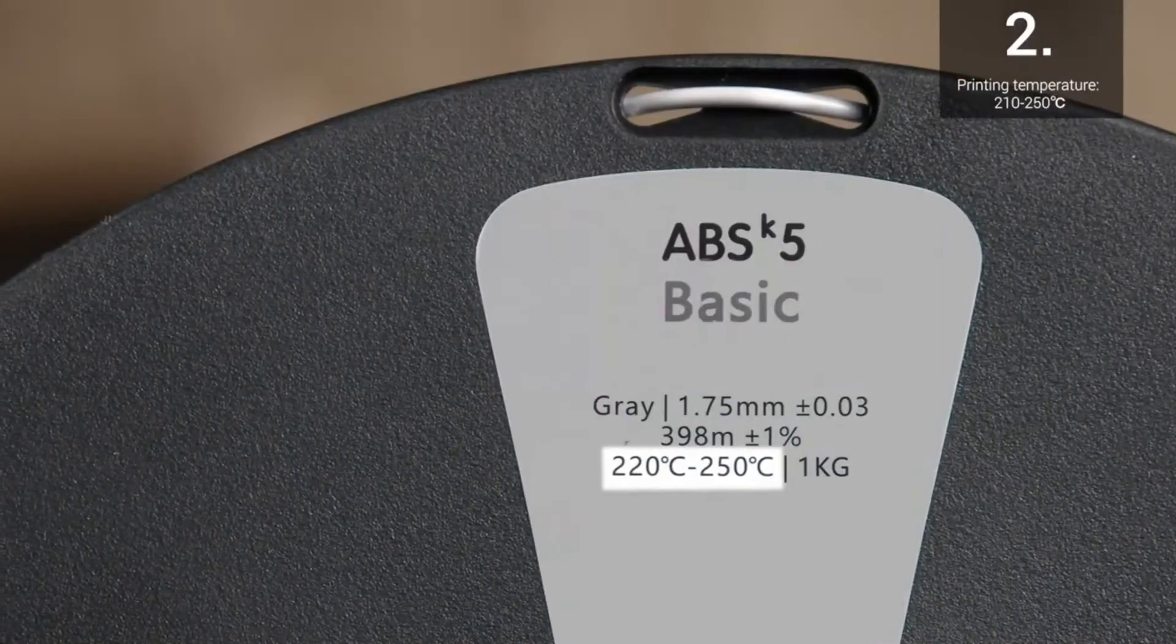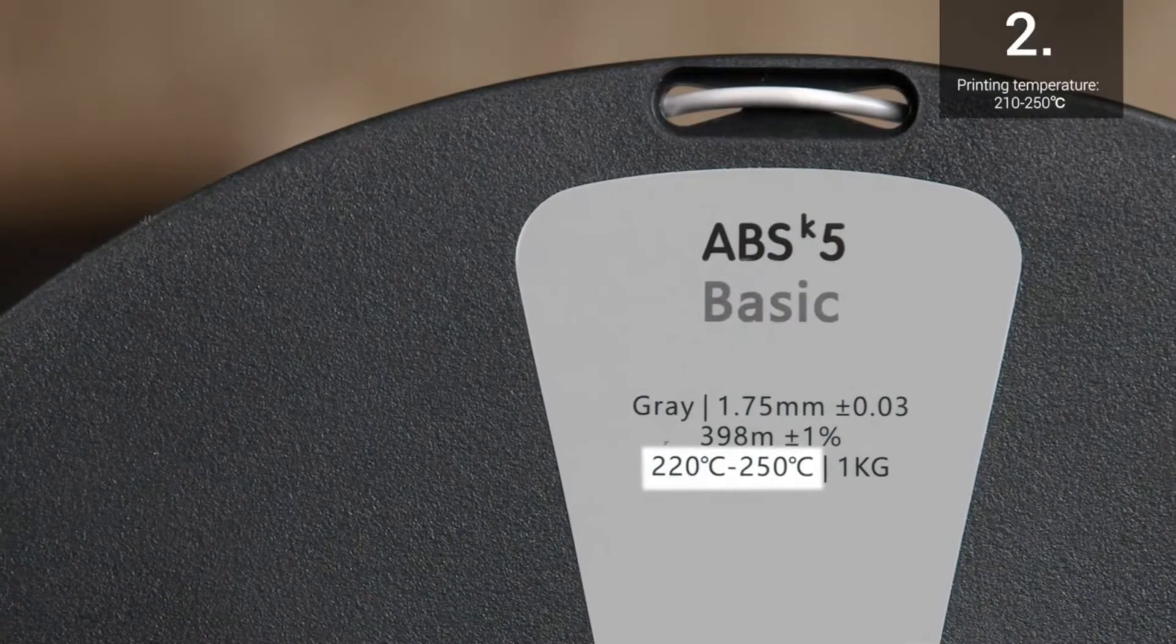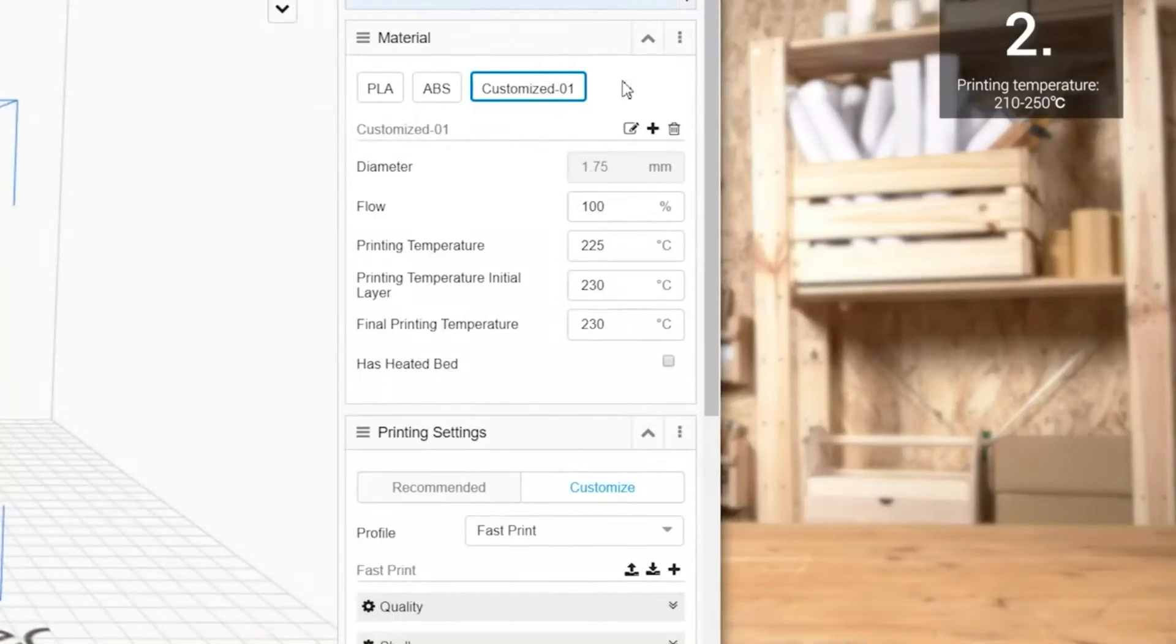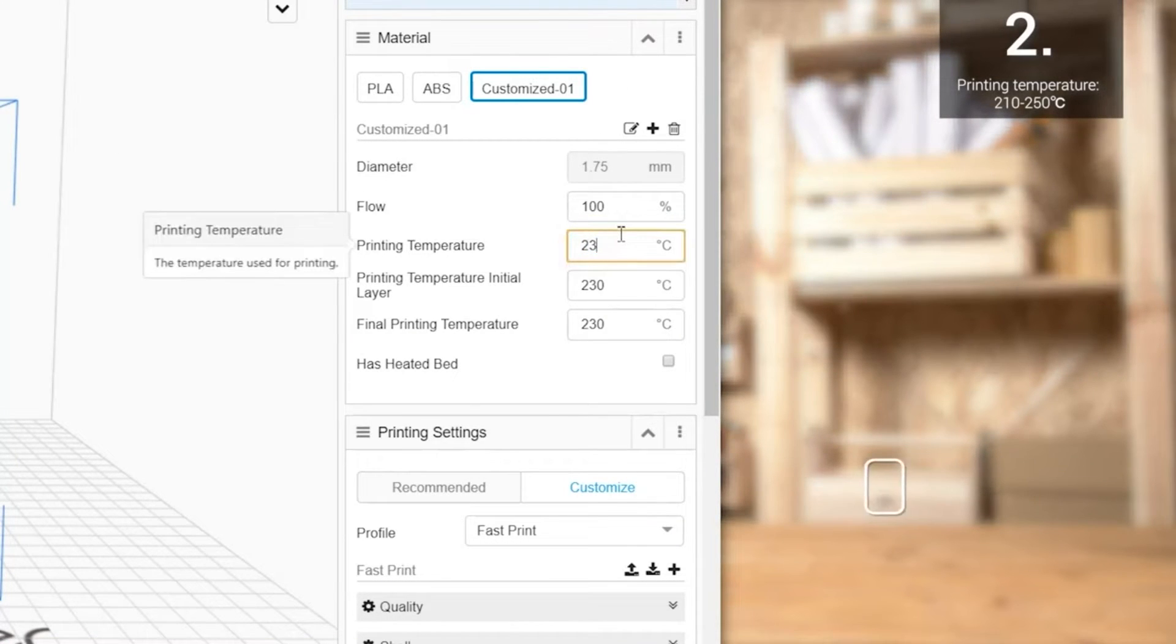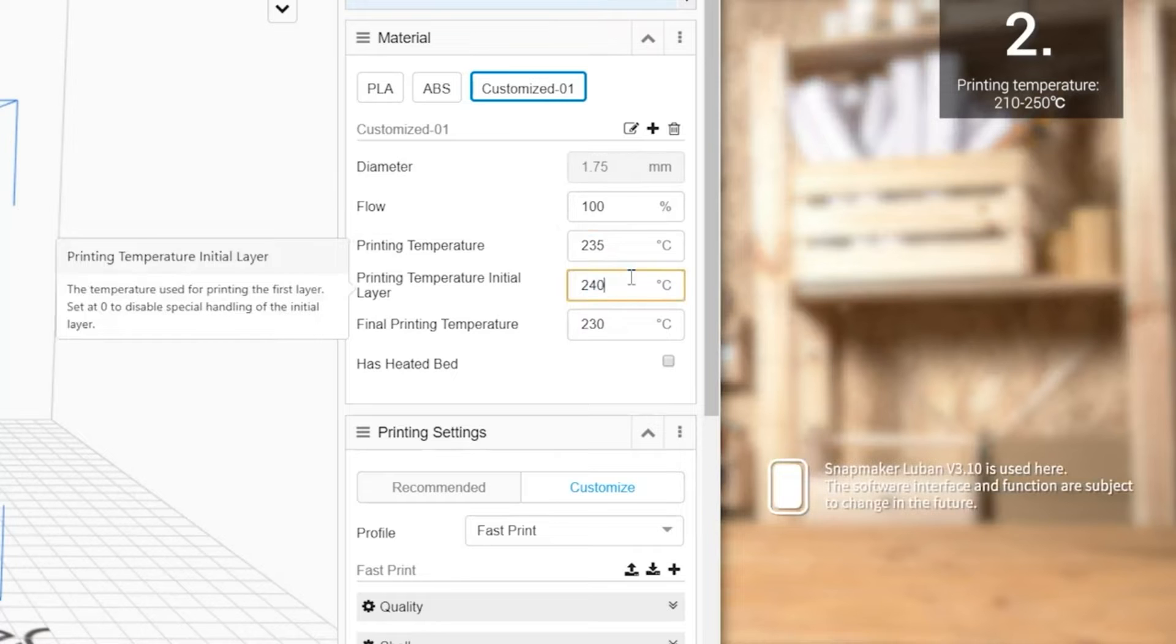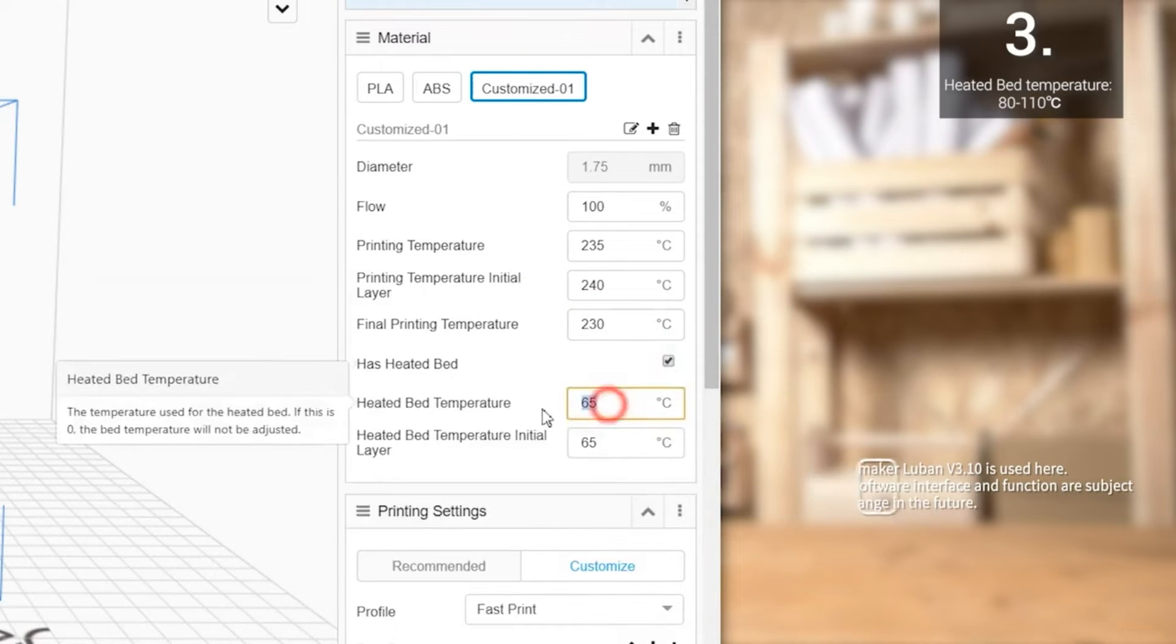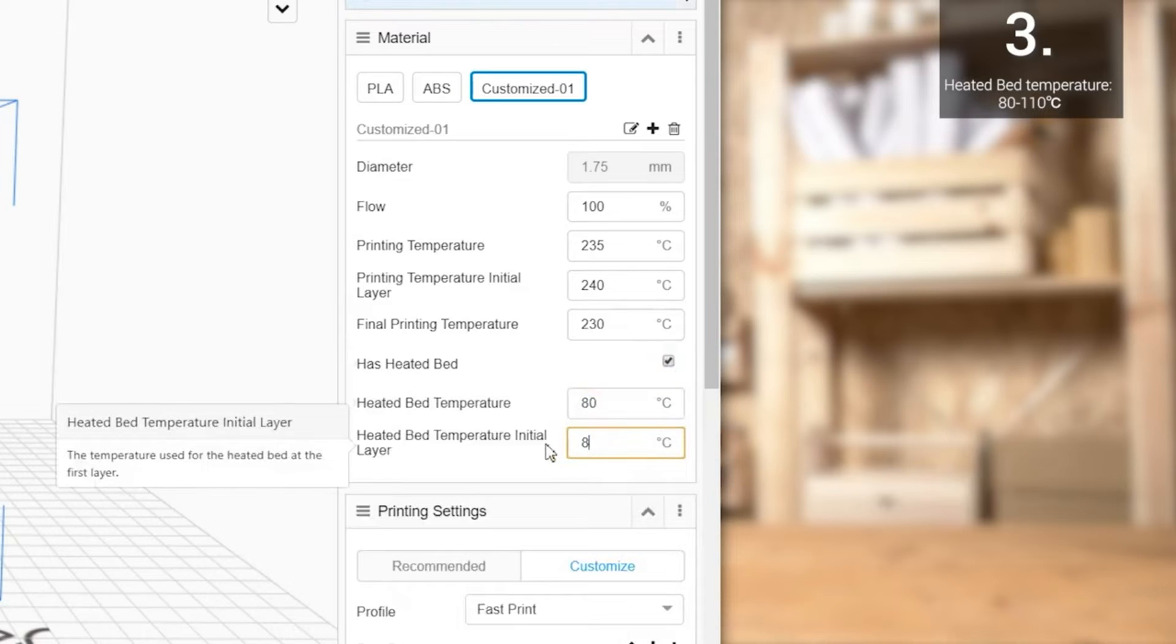Second, ABS must be printed at a higher temperature than PLA. You'll find a recommended temperature on most filament spools and boxes. If not, try setting it between 210 degrees Celsius and 250 degrees Celsius. Also, use a heated bed, and set the temperature at 80 degrees Celsius to 110 degrees Celsius.